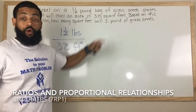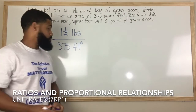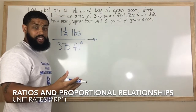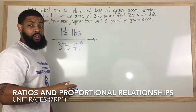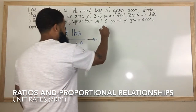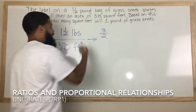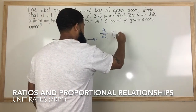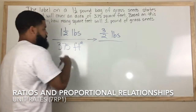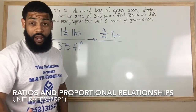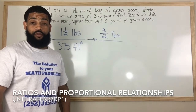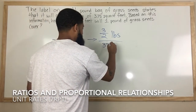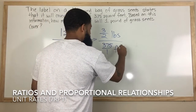In the numerator, I'm going to change it into an improper fraction. One and a half can be rewritten as 3 over 2, so we still have pounds. And 375 — if we want to change it to a fraction, we just place it over 1, so this is 375 over 1, and it's still feet squared.